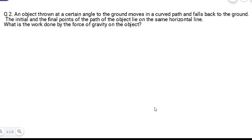And the question is: an object thrown at a certain angle to the ground moves in a curved path and falls back to the ground. If initial and final points of the object lie on the same horizontal line, what is work done by force of gravity?